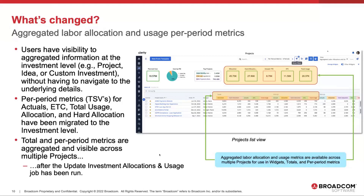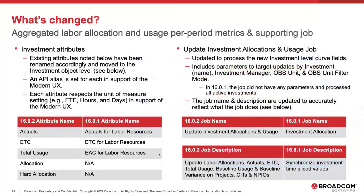That's a job you want to be running on a regular basis so that at this level your metrics are as up to date as possible. The existing attributes noted have been renamed and moved to the investment object level. An API alias has been set for each one for use in the modern UX. Each one now supports the unit of measure — like FTE, hours, and days — prevalent throughout the modern UX. Allocation and hard allocation did not exist at the lower level, so they've been introduced new at the investment level.